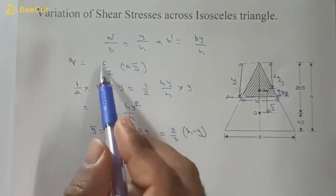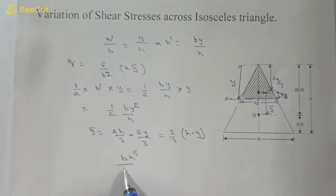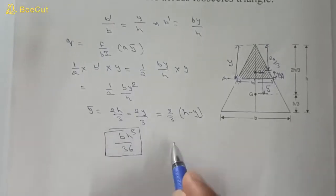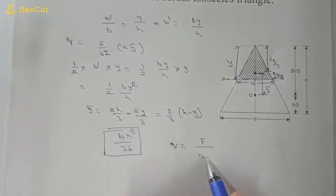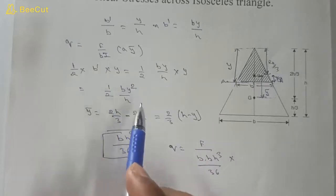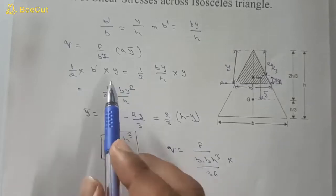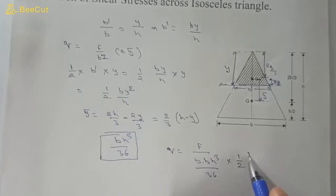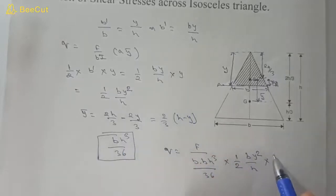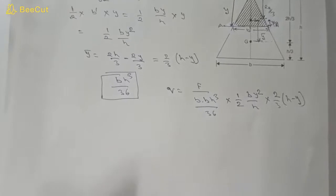Width b and shear force F are constants. The moment of inertia of the triangle is I = bh³/36, which is the standard formula. Substituting all values, shear stress becomes: q = F / (b * bh³/36) * (by²/2h) * (2/3)(h − y). This is the expression for shear stress before simplification.